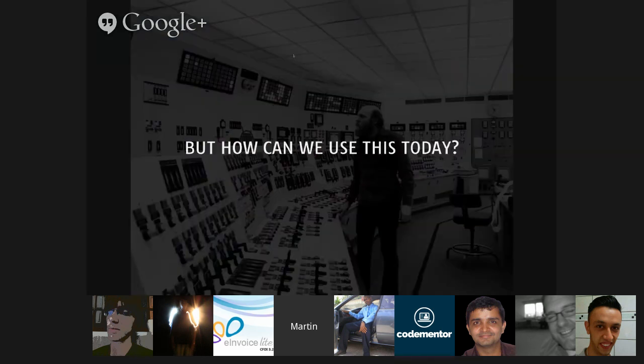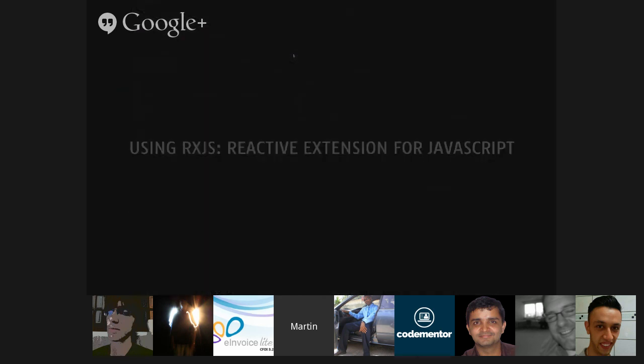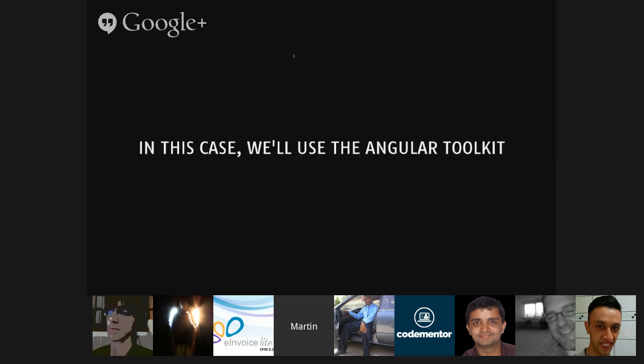So how can we use this today? We can use RxJS — Reactive Extensions for JavaScript. RxJS was created by Microsoft. Eric Meyer works there and is a genius with reactive and functional programming — one of the first people working on this. We'll use the Angular toolkit here, but if you're not using Angular the code and ideas are pretty much the same; just the implementation changes.